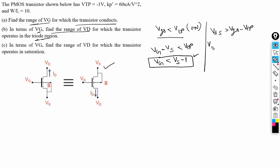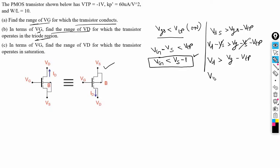We can simplify this equation as VD minus VS greater than VG minus VS minus VTP, so VS cancels out. We can further simplify this as VD greater than VG minus VTP. Substituting VTP equals minus 1, we get VD greater than VG plus 1. This is the range of VD in terms of VG for which the transistor is biased in the triode region.